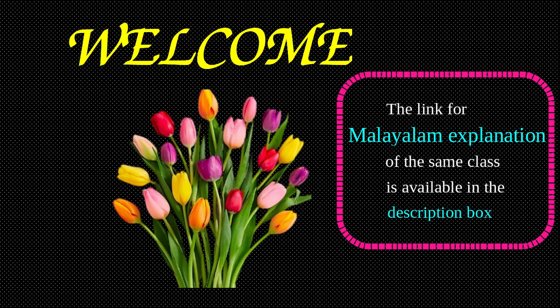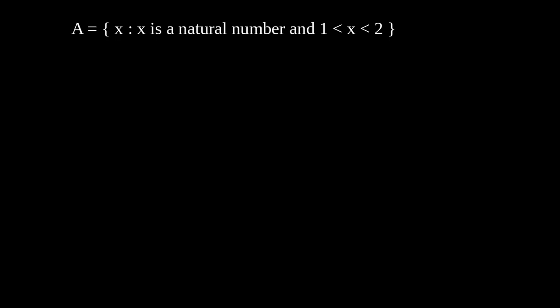Good morning all, welcome to the fourth part of the chapter Sets. Today we are going to learn types of sets. See the first example: let A equal the set of all x such that x is a natural number and 1 less than x less than 2. How many elements are there in the set?